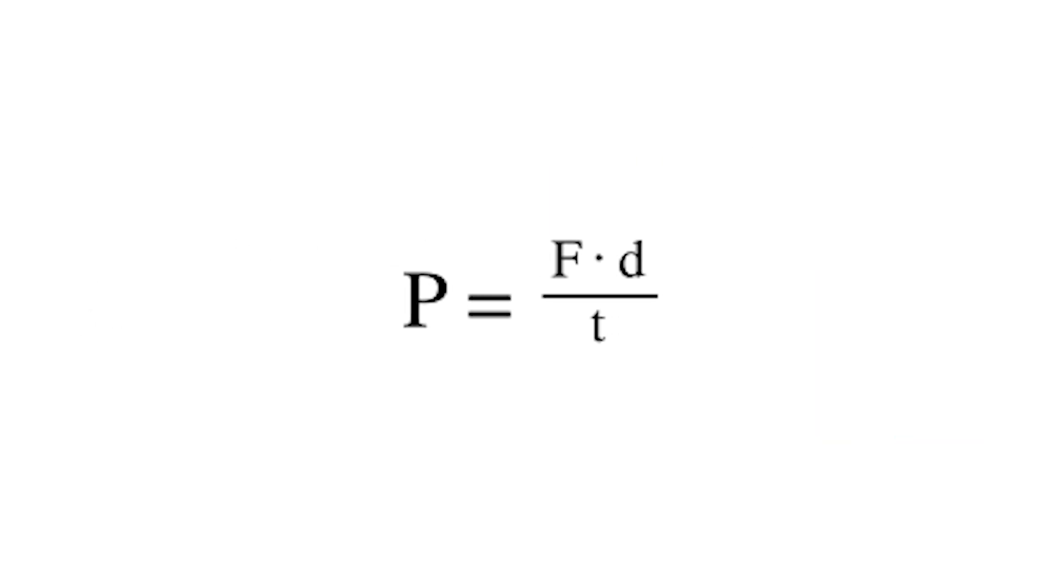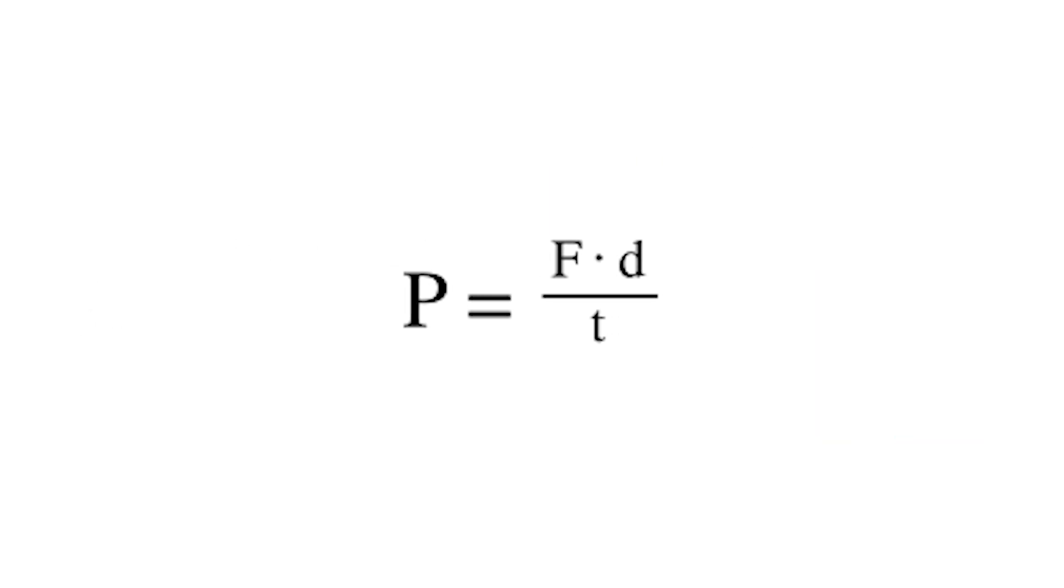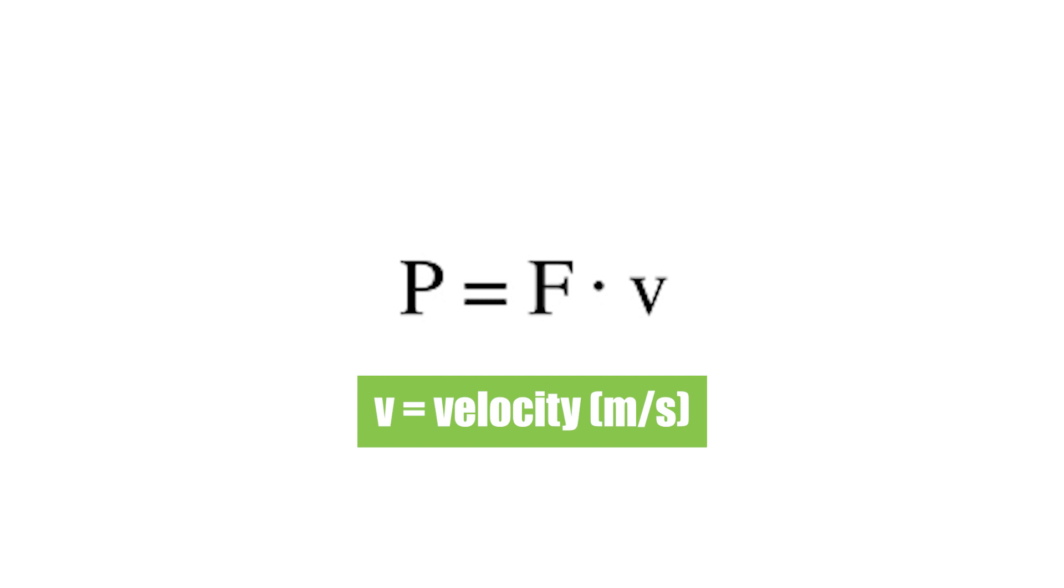Mechanical power can also be written as force times distance divided by time. And since distance divided by time, d over t, equals velocity, power can be written as force times velocity.